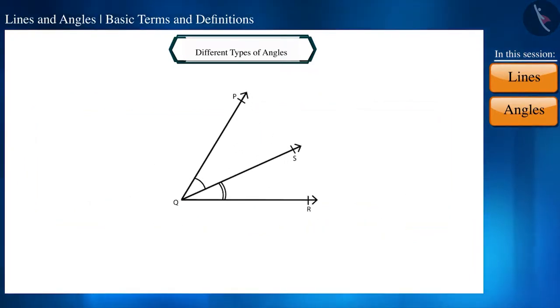Let's move ahead. If two angles have a common vertex, a common arm, and their non-common arms are on different sides of the common arm, then we call such angles adjacent angles.